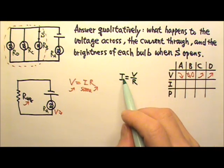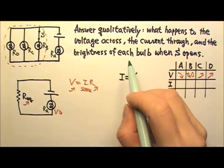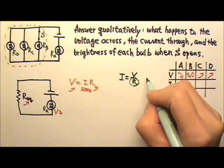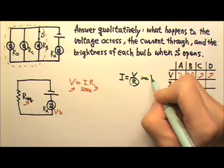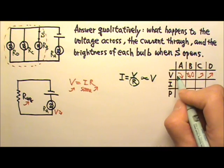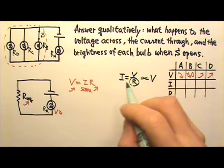And because the current I equals V over R, for each bulb the resistance stays the same. That means the current for each bulb is proportional to the voltage across each bulb. So the current will change according to the voltage change.